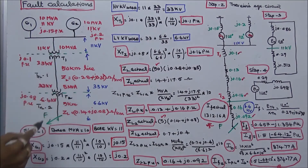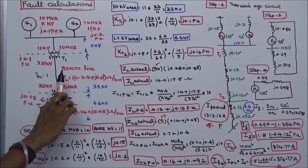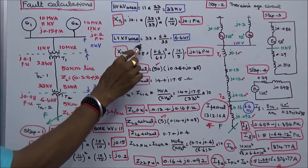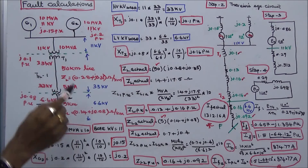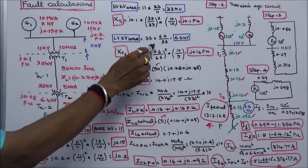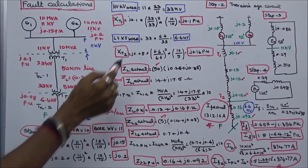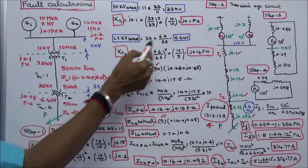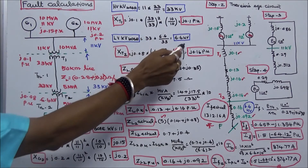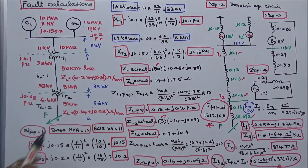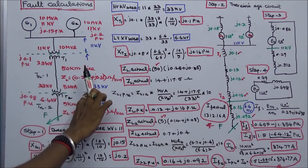Next, I calculate the low-voltage kV base. The low-voltage kV base equals the high-voltage kV base of 33 kV multiplied by the LT/HT ratio, which is 6.6/33. Therefore, the low-voltage kV base is 6.6 kV.